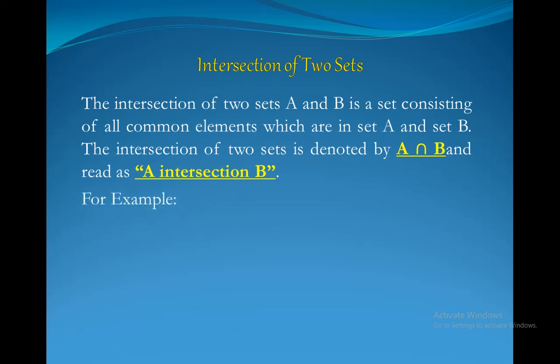For example, consider two sets: A having elements {A, E, I, O, U} whereas set B has elements {A, B, C, D, E}. Taking their intersection, A ∩ B becomes {A, E, I, O, U} ∩ {A, B, C, D, E}. You can see the two elements A and E are common among both, so our answer of A ∩ B becomes {A, E}.